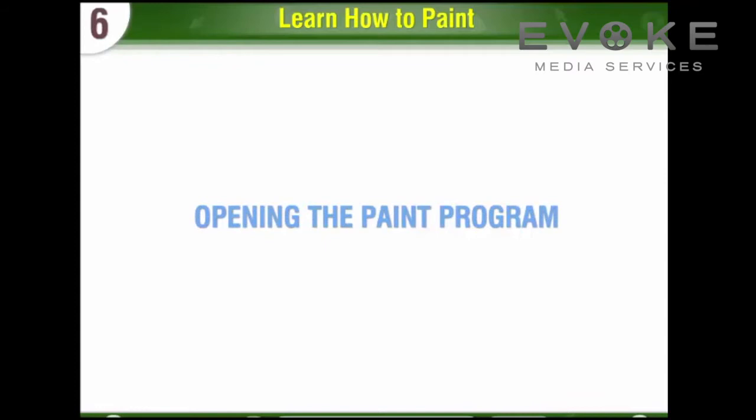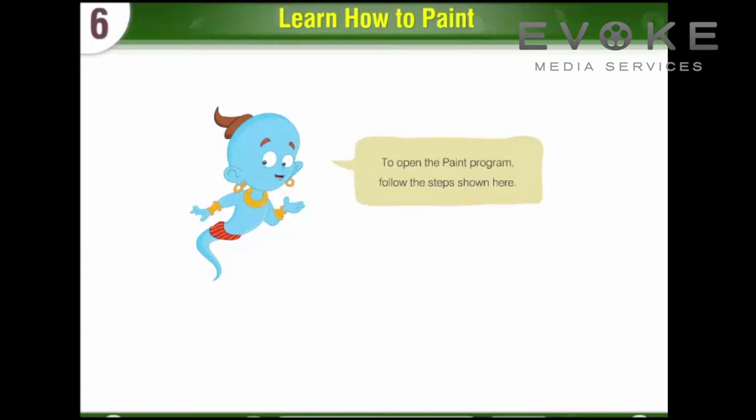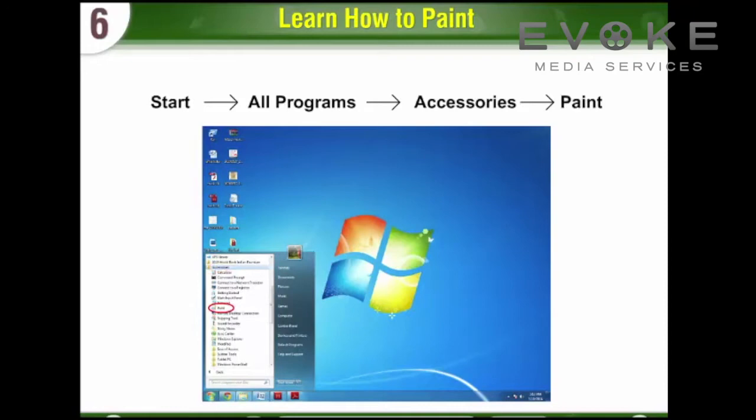Chapter 6: Learn How to Paint. To open the Paint Program, follow the steps shown here: Start, All Programs, Accessories, Paint.